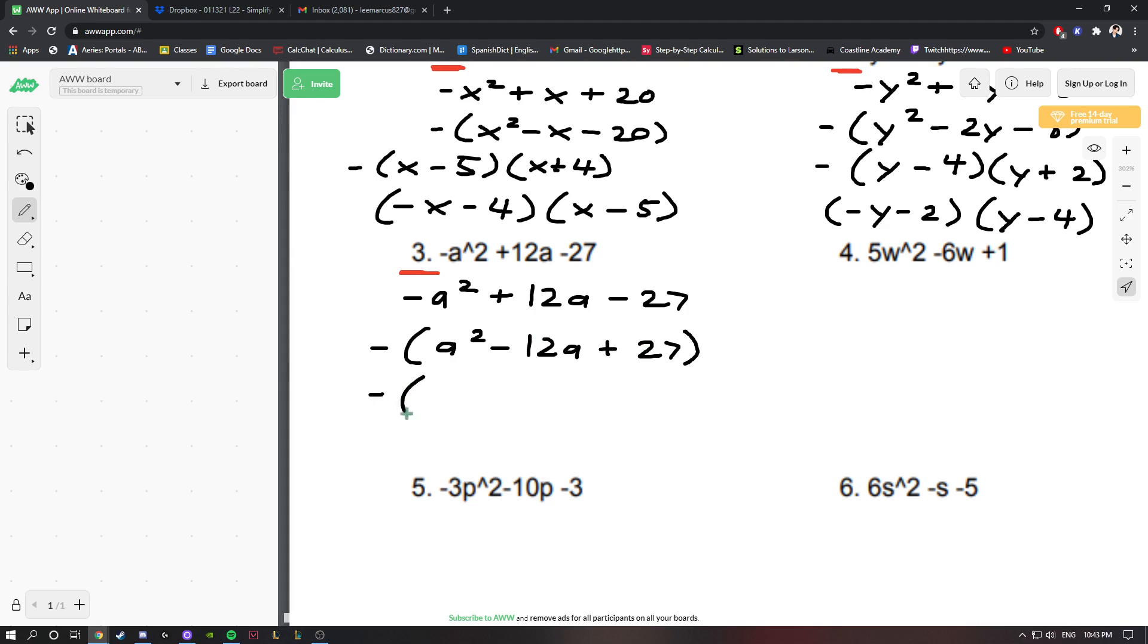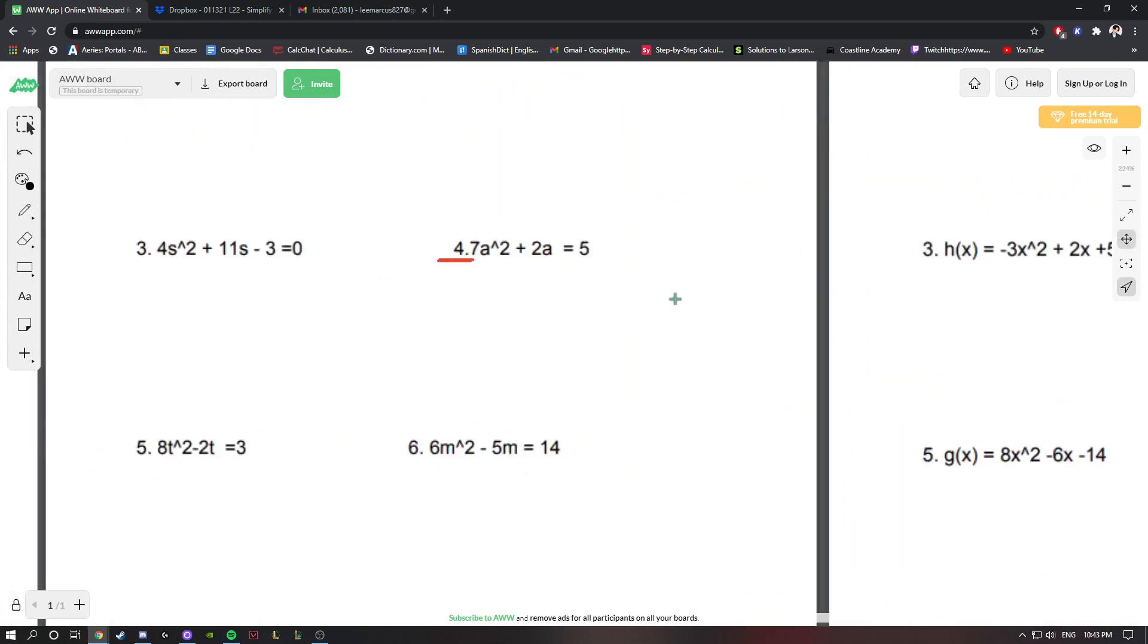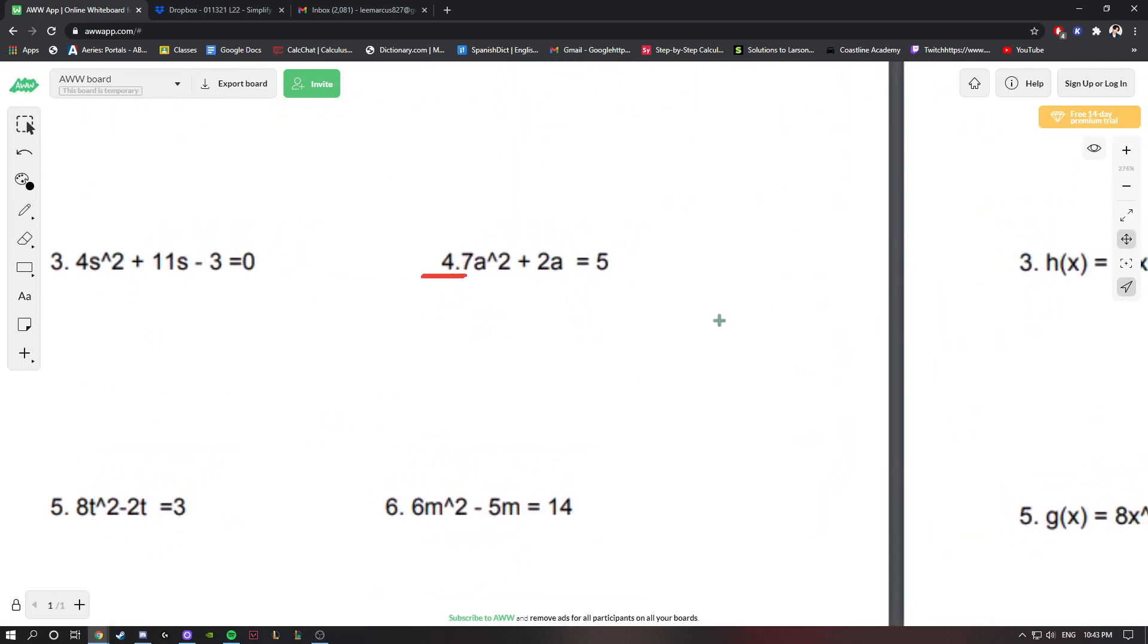We're going to keep this negative on the outside. We're going to get (a - 9)(a - 3). We could get -(a + 9)(a - 3). You could also leave the negative on the outside as long as you distribute properly.